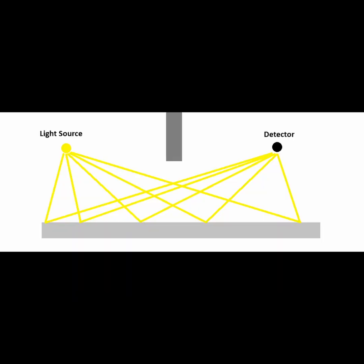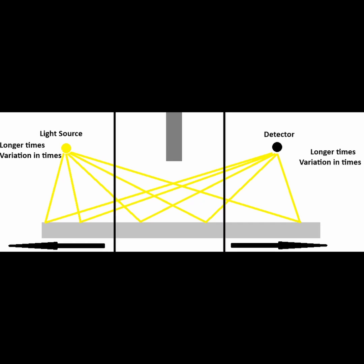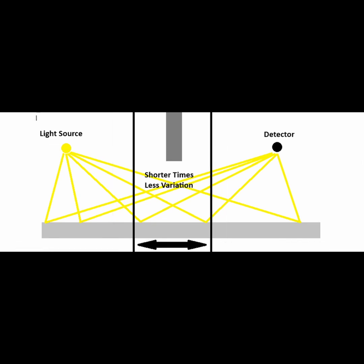It turns out that the light at the far ends of the mirror requires much longer travel times to reach the detector, and the travel times vary much more than at the center. Alternatively, if you look at the center of the mirror, the travel times around that area are shorter and much less varied—they tend to be more similar to each other in that neighborhood.